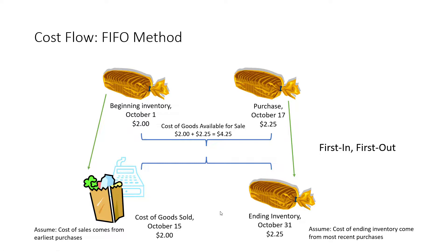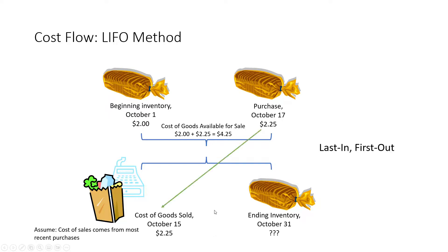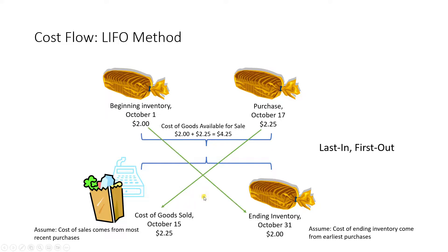This assumption probably registers with you the most. As a consumer, you might think this seems to fit the grocery store example where they're trying to rotate the shelves and get rid of the oldest stuff. We can make other assumptions though, and that might be LIFO, or last in first out, which is going to go in the opposite order. Our first out — our initial sale — we're going to assume comes from our last, most recent, or latest purchase. So the first unit we sold comes from our latest purchase on October the 17th at $2.25, and therefore what we're left with must have come from my earliest purchase, October the 1st at $2. Reverse direction: cost out my latest purchase at $2.25, ending inventory is going to be at $2.